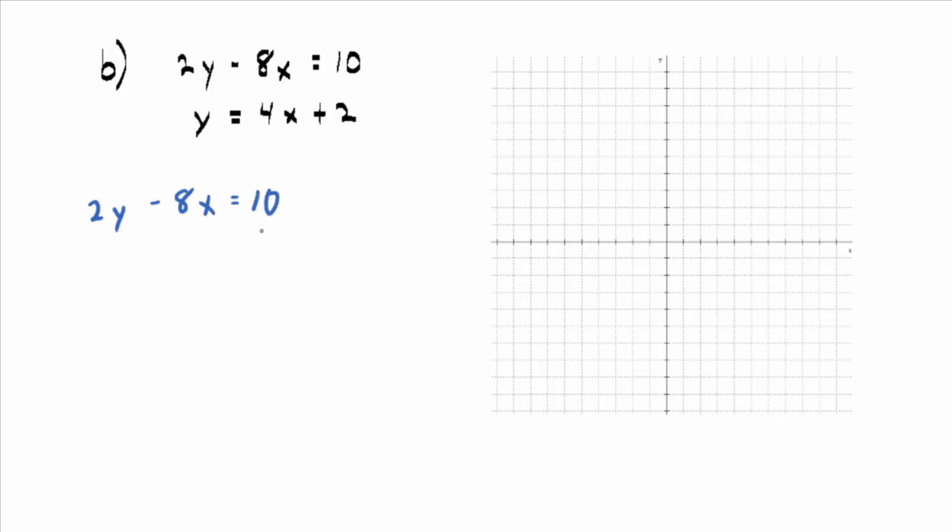So is the method of graphing the intercepts going to work all that well here? I mean, you could get it to work, but you're going to have a fraction there, right? Because that 8, that negative 8 on the x does not divide the 10 evenly. So I wouldn't do that.